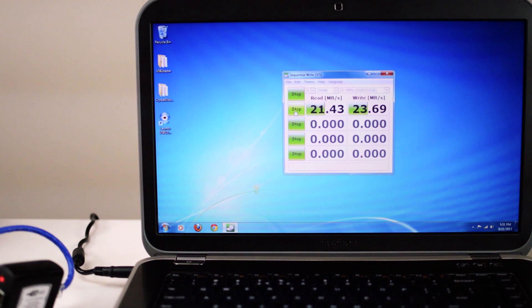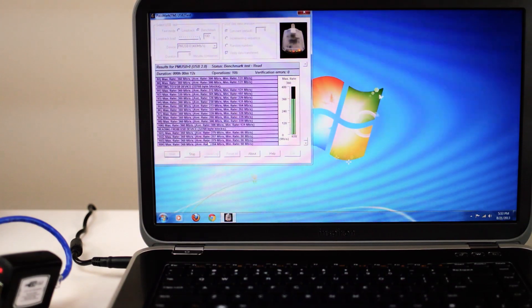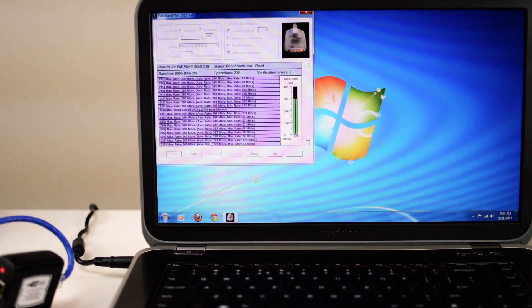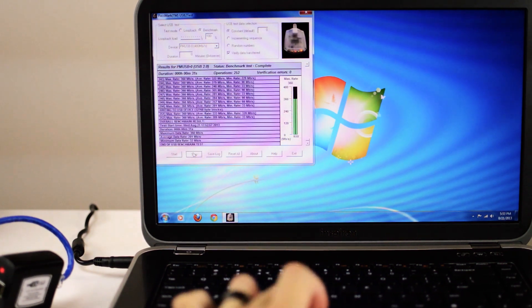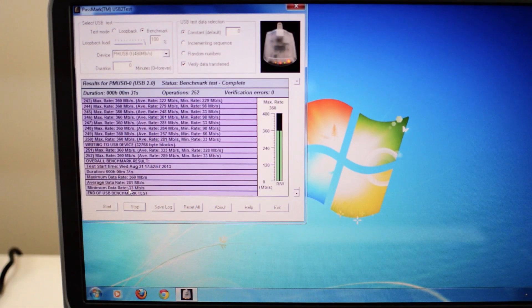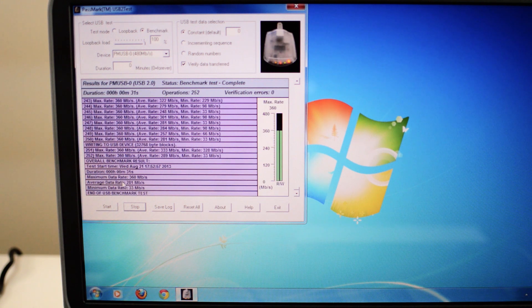After the test, we get 21.43 megabytes per second read and 23.69 megabytes per second write. And now we switch to our Passmark tester. And after the Passmark test, we get a max rate of 360 megabits per second read and 360 megabits per second write, with an average data rate of 281 megabits per second.